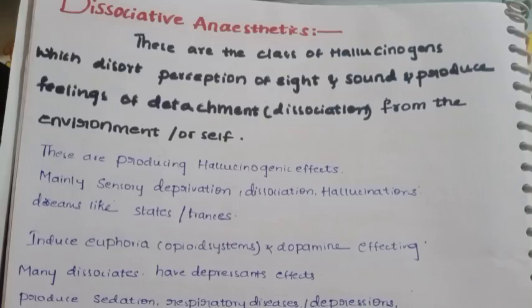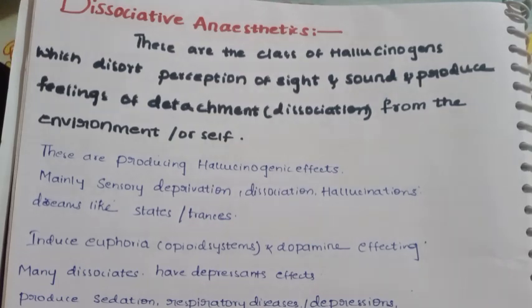Hello everyone, welcome back to the channel of pharmacy. This video is called Dissociative Anesthetics. This is Unit 5, Drugs Acting on Central Nervous System. In the topic of anesthetics, this is the third classification.